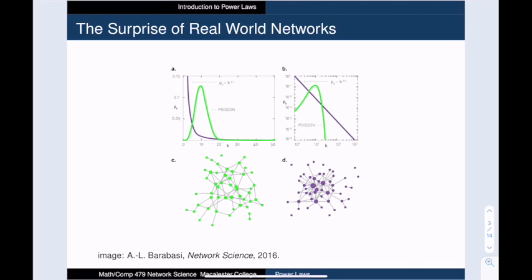In the green network, and its corresponding green bell-shaped curve, there is some variation in the degrees, but they span a very narrow range of values.